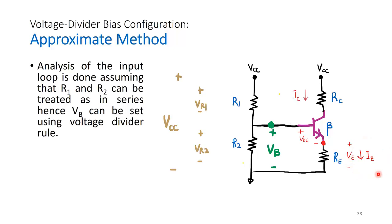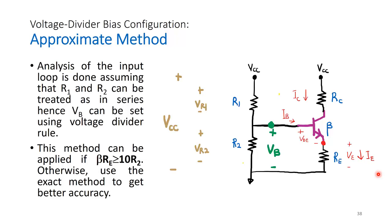This approximate method can only be applied if beta·RE ≥ 10·R2. If this condition is not satisfied, the values will not be very accurate. For better accuracy in this course, we use the exact method. But what is the reasoning behind the assumption? We can't simply assume R1 and R2 are in series without justification, so let's examine the logic.